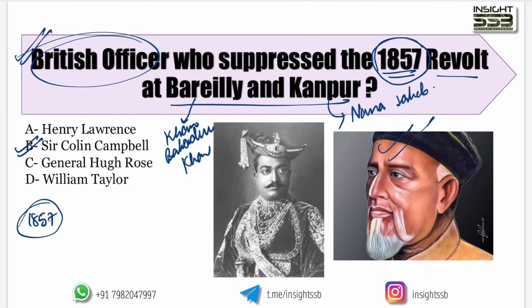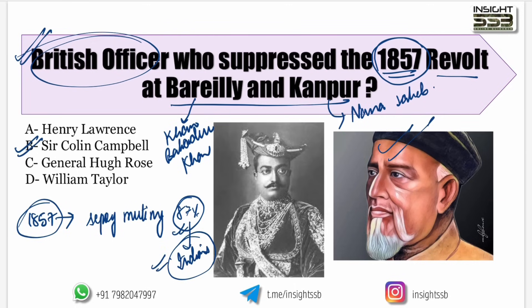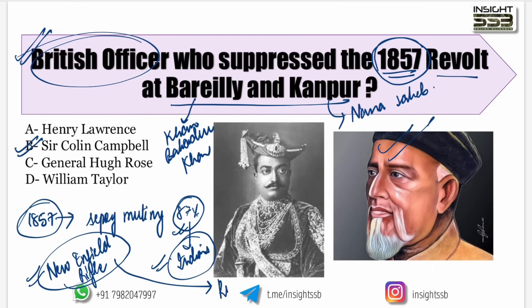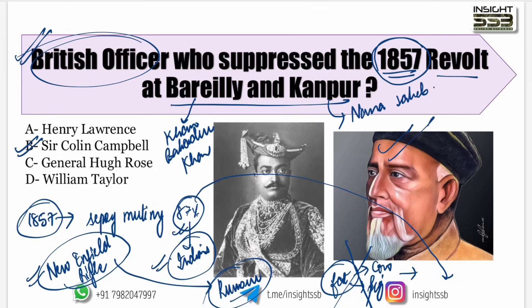The 1857 revolt started as a sepoy mutiny. Almost 87% of the British army troops were Indians who were treated very badly and not equally — at the officer level they were not paid well. The trigger was a new Enfield rifle whose cartridge had to be bitten open with the mouth. The cartridge was greased with cow fat and pig fat, which the Muslim and Hindu troops refused to use, saying it was against their religion.